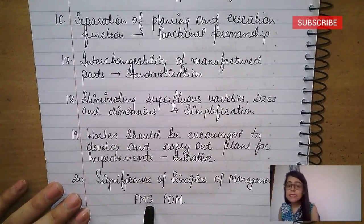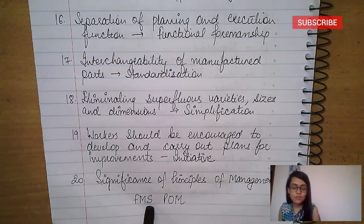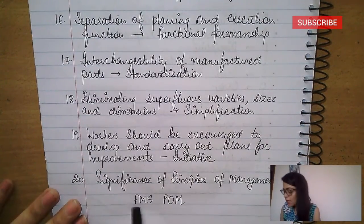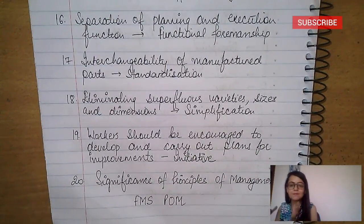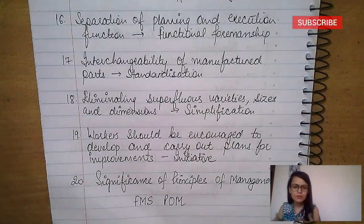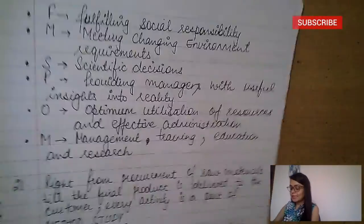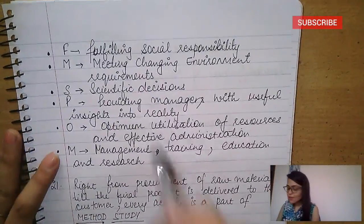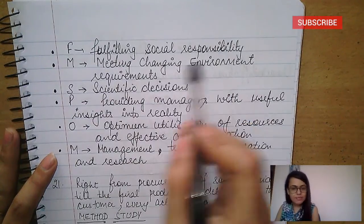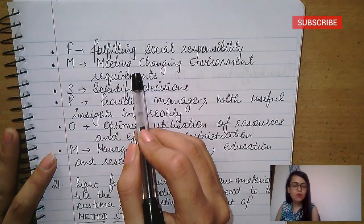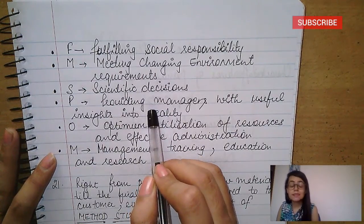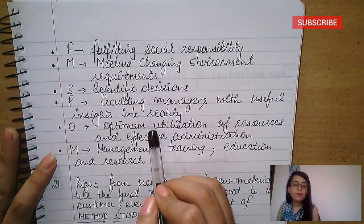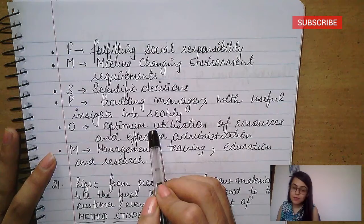For the significance of principles of management, the mnemonic is FMS — FMS is one of the best colleges for MBA. If you go there, you'll study Principles of Management. FMS POM. The significance keywords: Fulfilling social responsibility, Meeting changing environment requirements, Scientific decisions, Providing managers with useful insights into reality, Optimum utilization of resources, Effective administration, Management training, education and research.